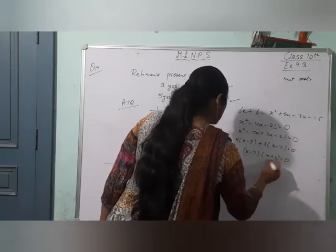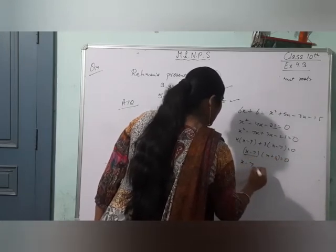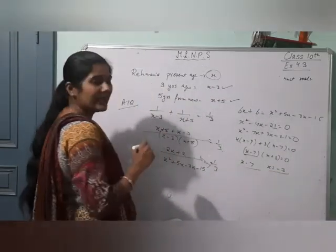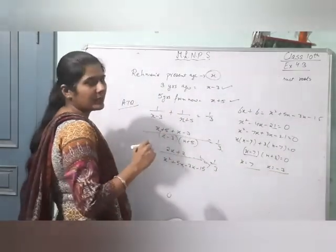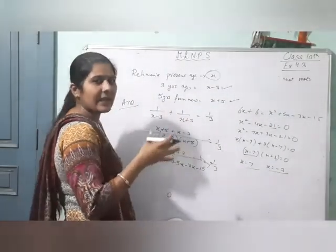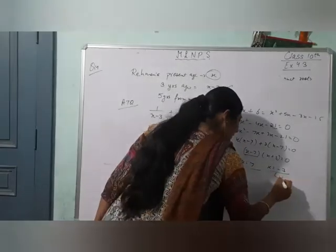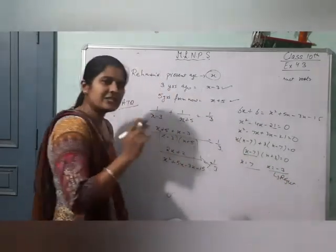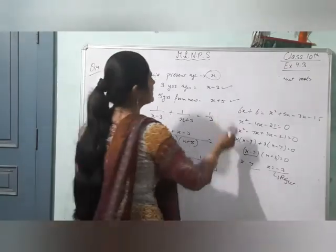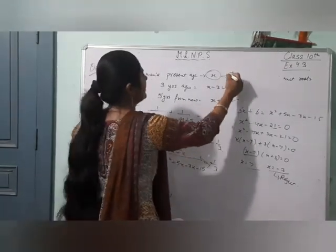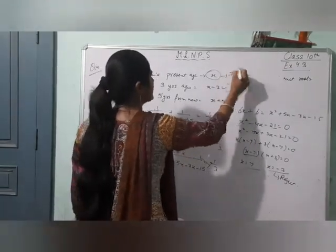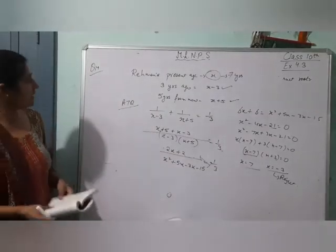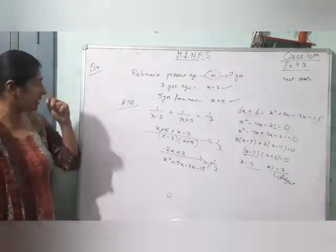So (x minus 7)(x plus 3) equals 0. Toh x ki value 7 ya x ki value minus 3. Ab age negative nahi ho sakti, so minus 3 ko reject kar dete hain. Toh x ki value 7 years. This is the answer — Rahman ki present age 7 years hai.